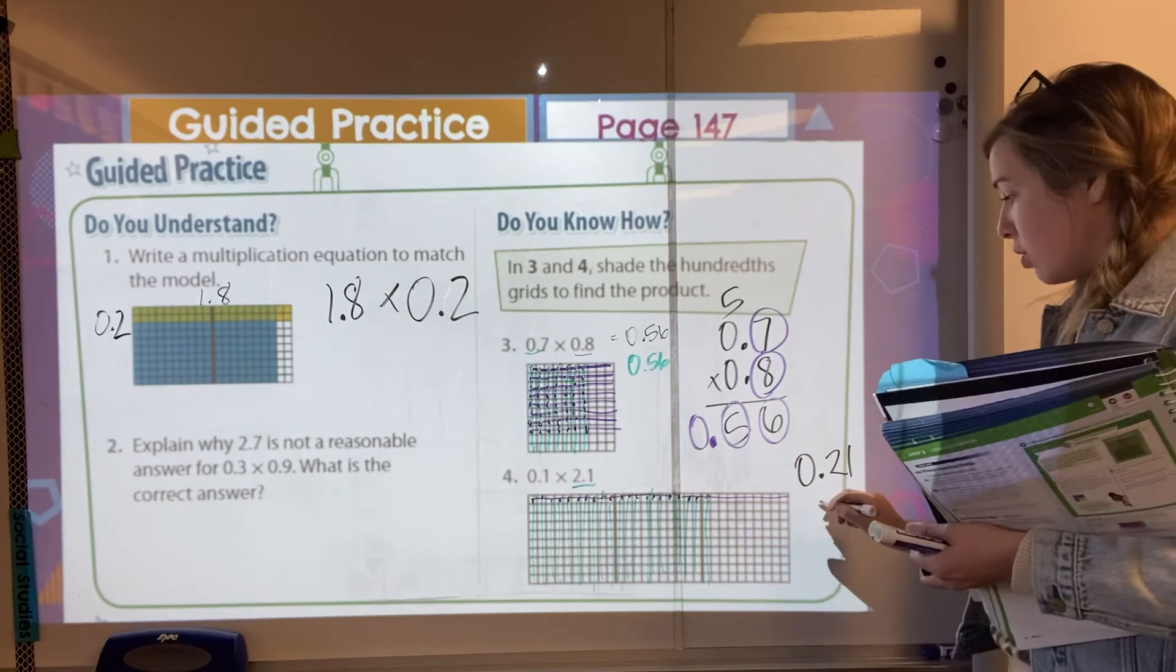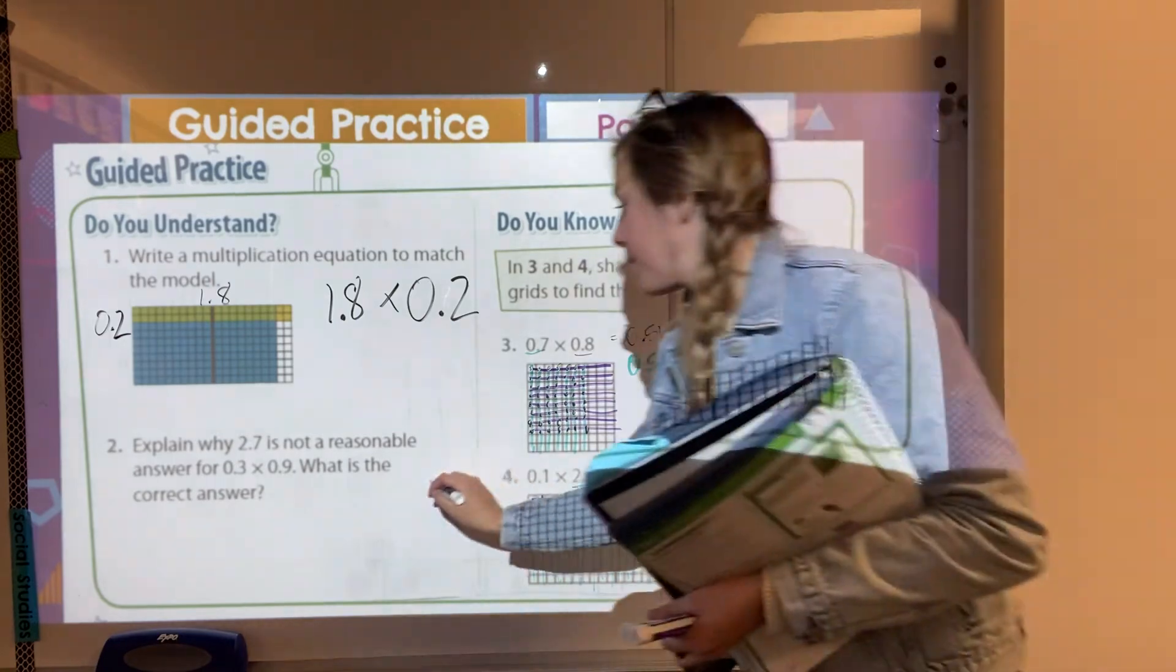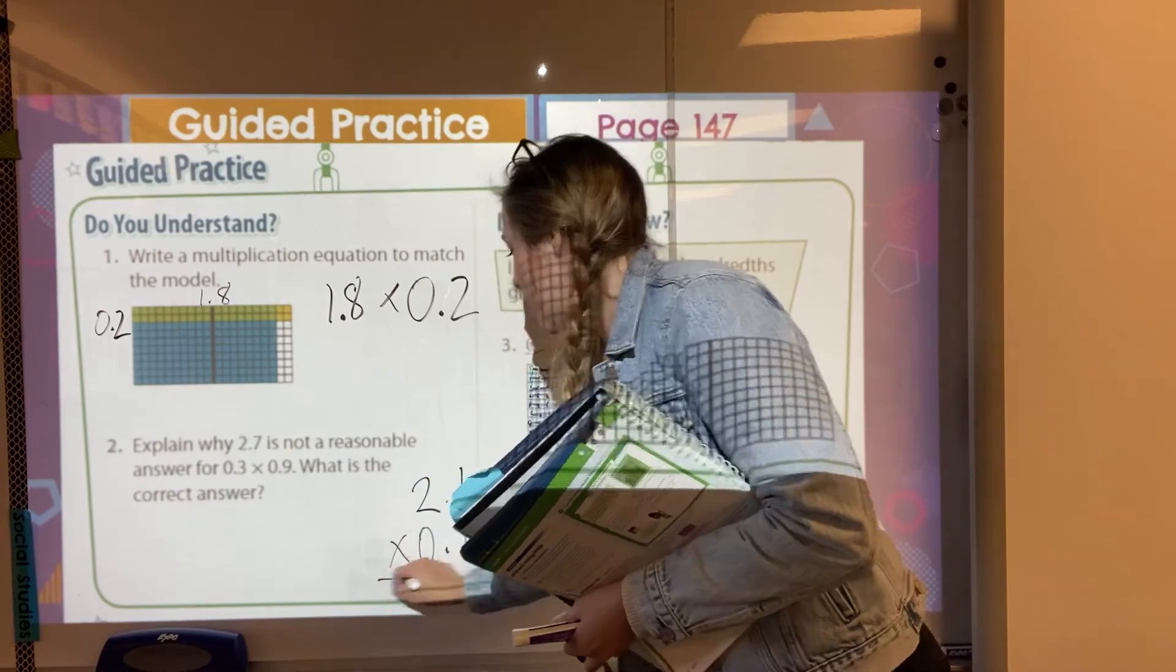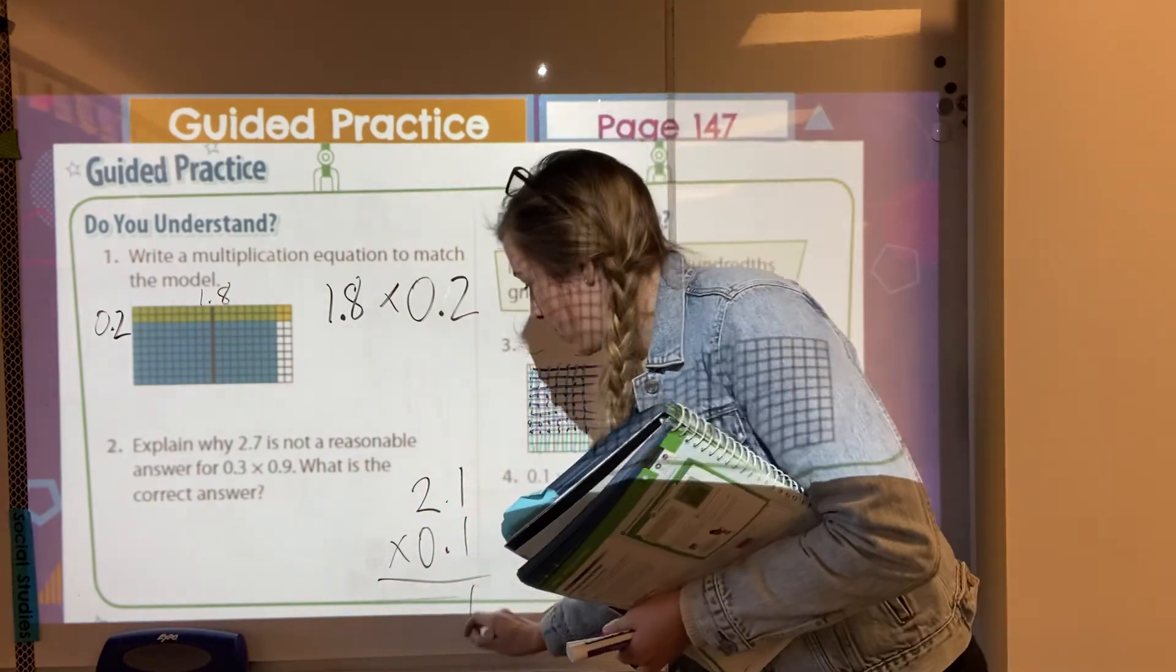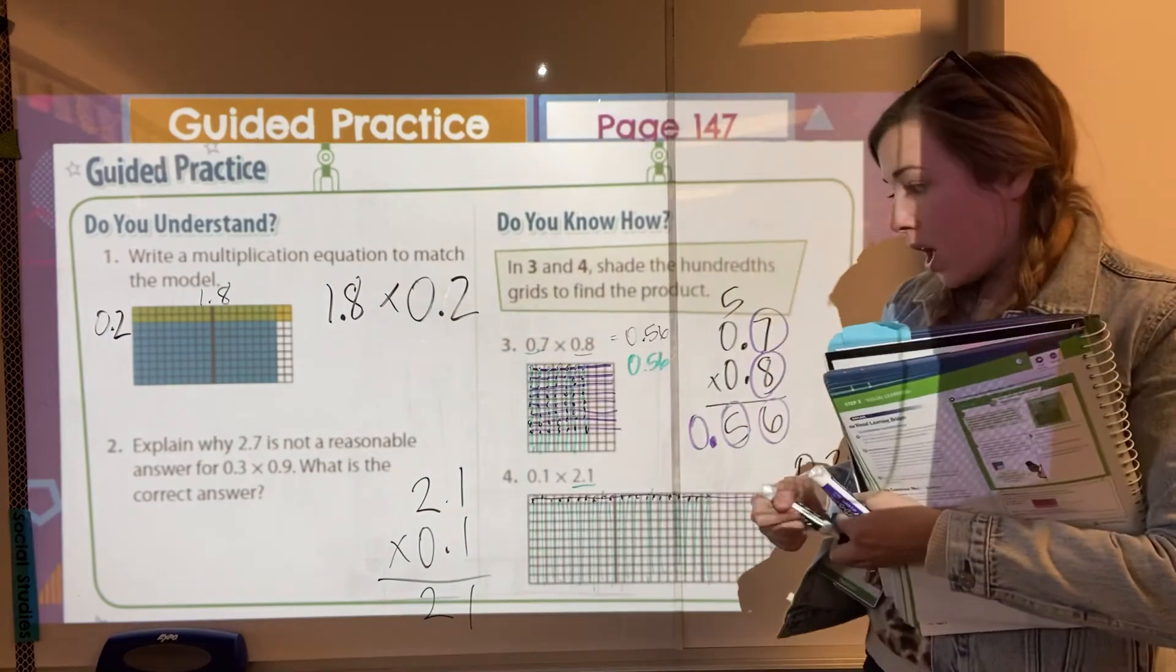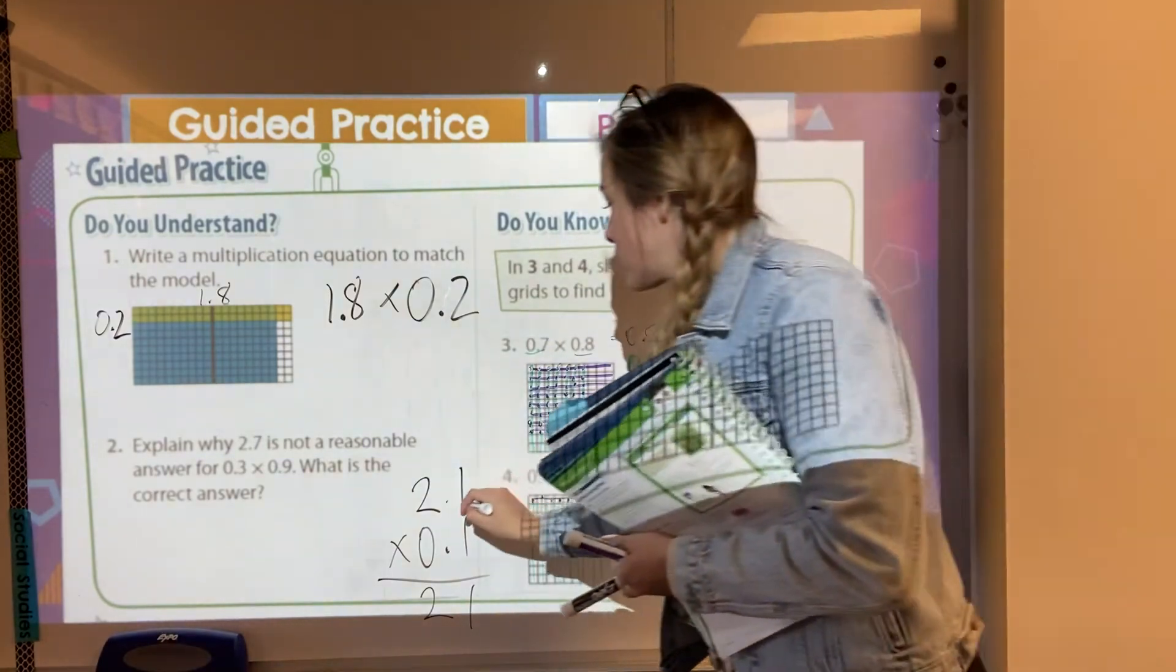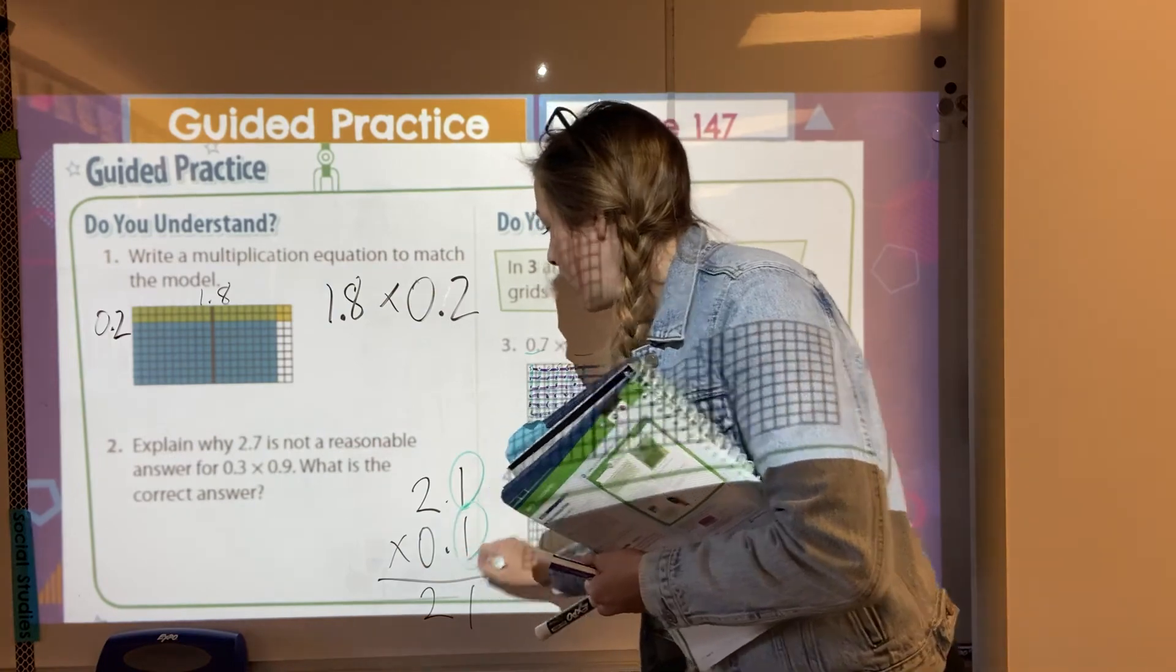Now again, we can just do the multiplication. So if I have my two and one tenth times one tenth. Well, one times one is one. One times two is two. And then I have to count up how many numbers I have to the right of the decimal. So if I circle my one here and my one here, while I circle one, one,